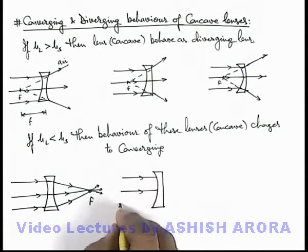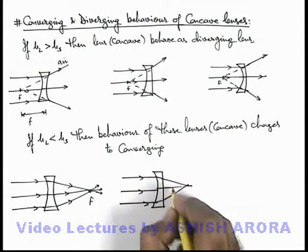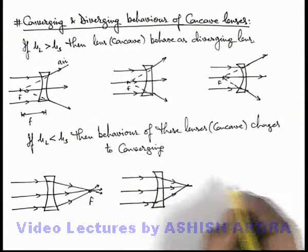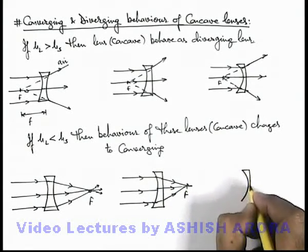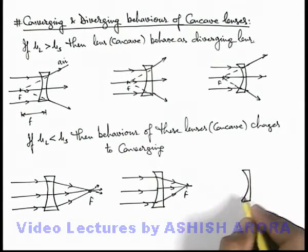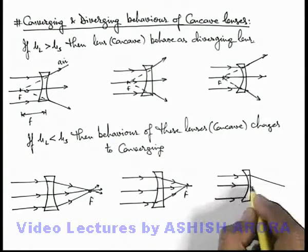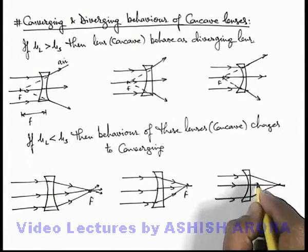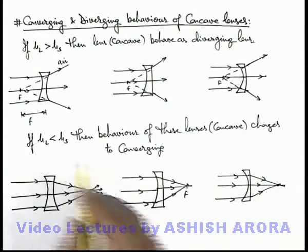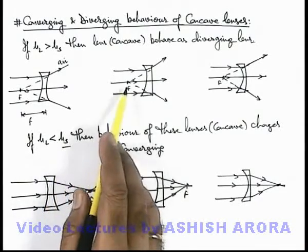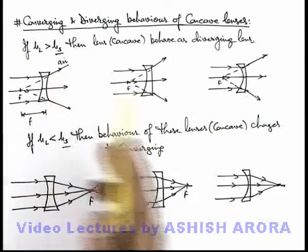Plano-concave or convexo-concave lenses will also behave as converging lenses if the surrounding medium is denser, and light rays converge to a point on the other side of the lens. So in all cases, whenever we talk about non-intersecting lens surfaces, these behave as converging lenses if the surrounding medium is denser, and as diverging lenses in the common case where the surrounding medium is air or a rarer medium.